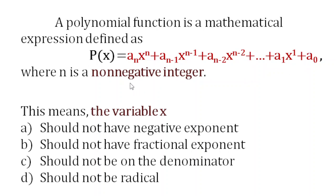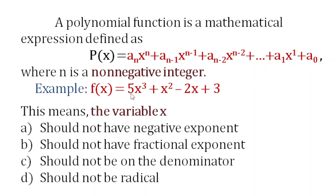It is easy to understand with an example. We have f of x equals 5x cubed plus x squared minus 2x plus 3. Notice the exponents: the highest is 3, then 2, then 1, and then a constant. So this 5 here is our a sub n, the leading coefficient, then a sub n minus 1 is our next coefficient, and the last is our constant.